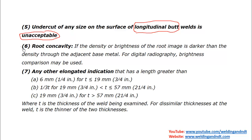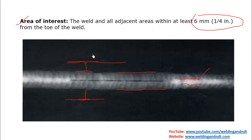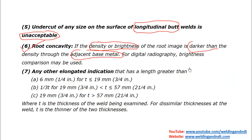Now we'll move to root concavity. Root concavity can be judged by the density or brightness on the film. If the image of root concavity is darker than the density at the adjacent base metal, that will be unacceptable. In digital radiography, brightness comparison may be used instead.